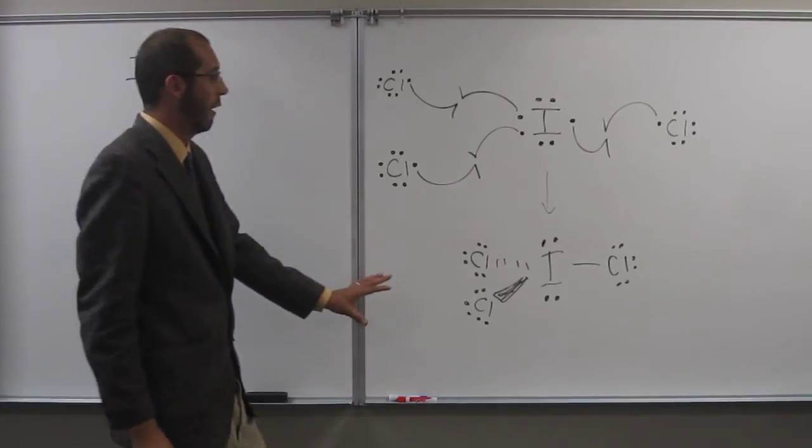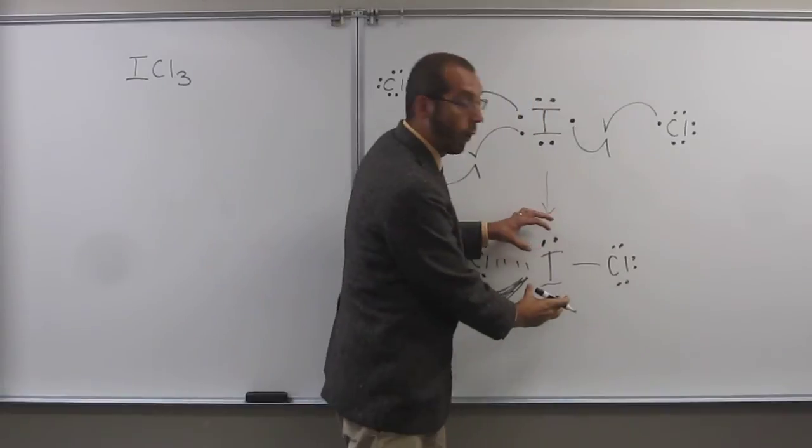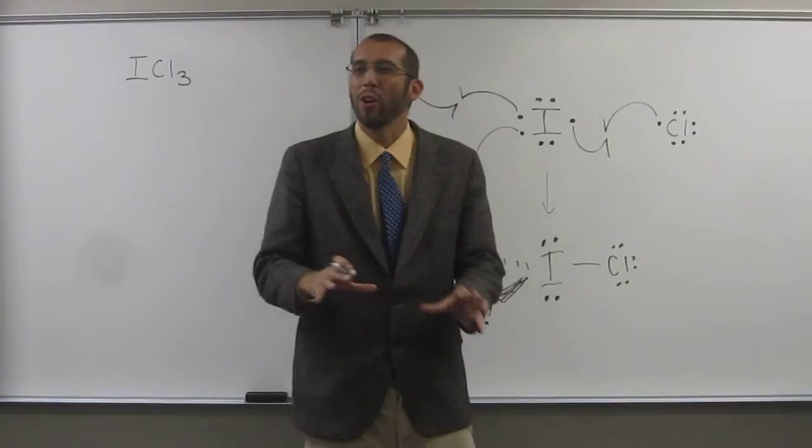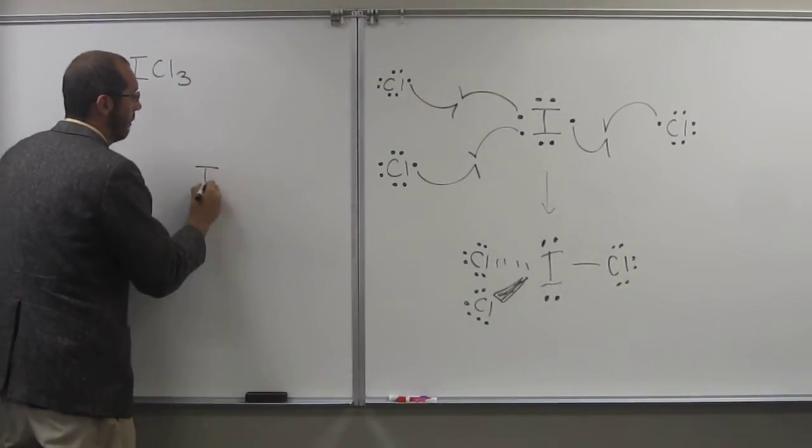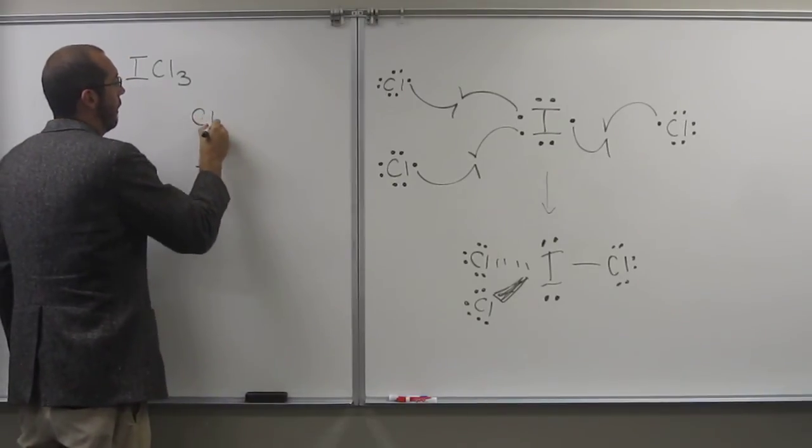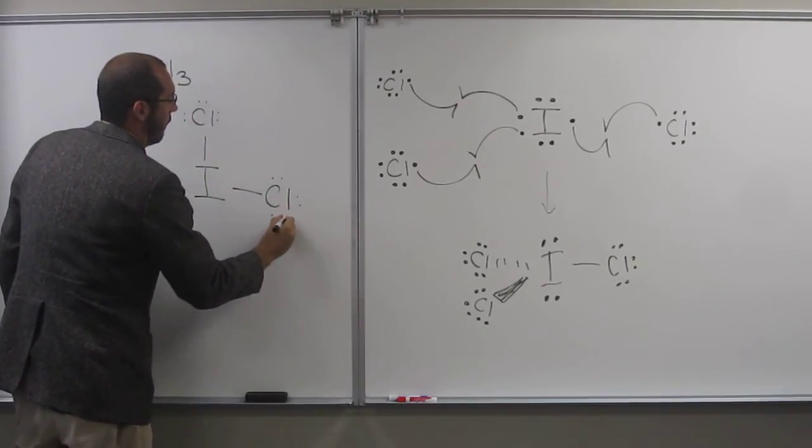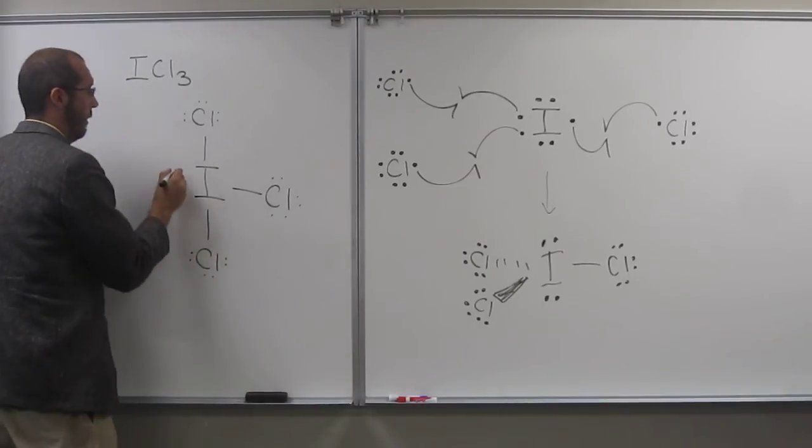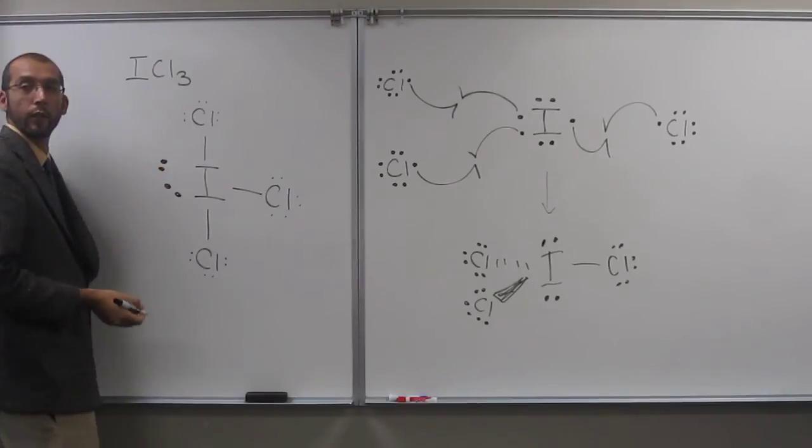So even a better way to draw this would be with the orbitals kind of pointed to the sides, okay? But you can't really show that very well on the board without showing the orbitals themselves. So oftentimes you'll see this molecule drawn like this with the lone pairs here and here.